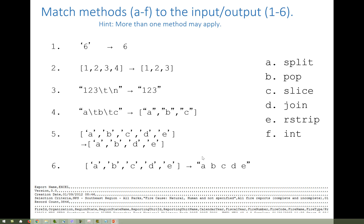That's why we have a review of string and list operations. Can you match the methods A through F on the right side of this slide with the input and output shown on the left? For example, the input is the string '6' and the output is the integer 6. Which operation or method would give you that output for that input? Take a moment to write down your answers. You may notice that more than one method or function may apply to some of these.